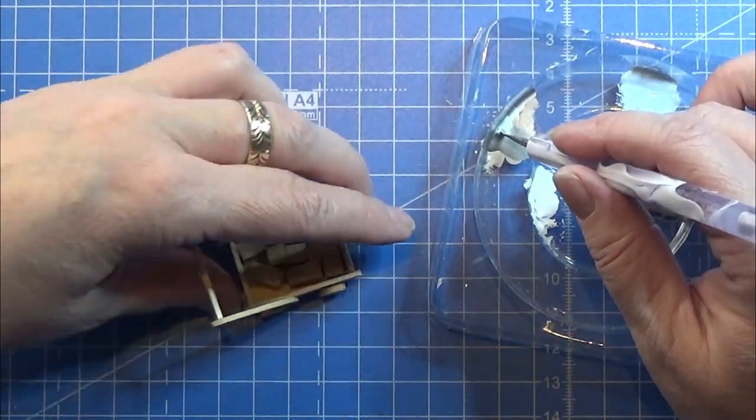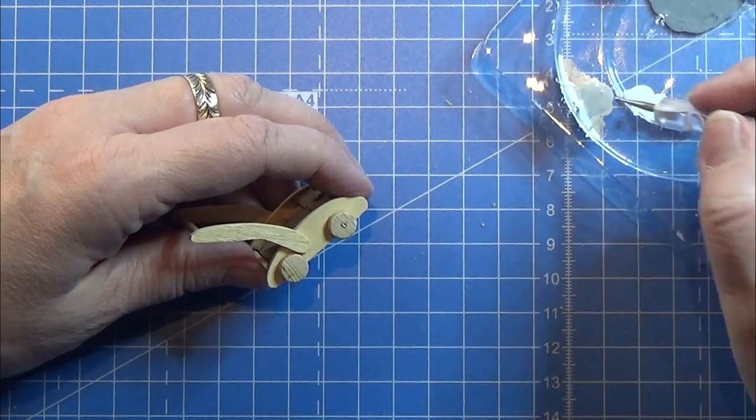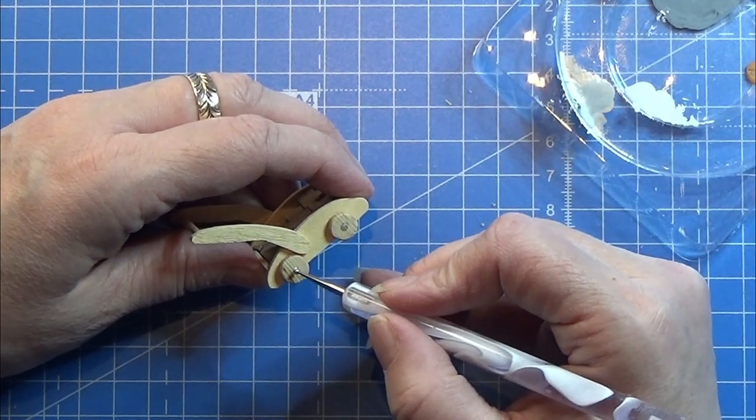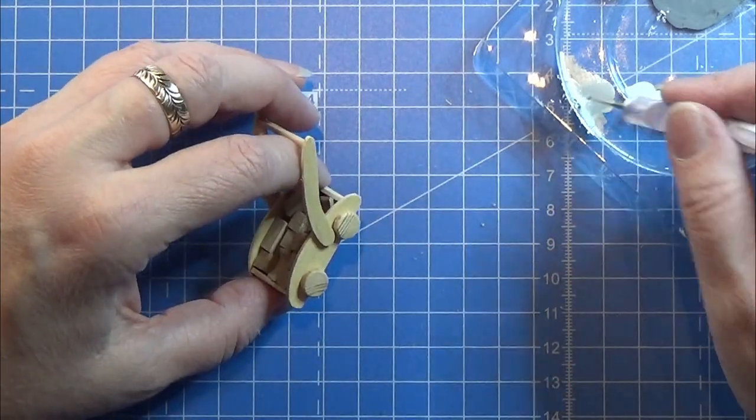Now I'm going to take my silver ink and I'm just placing a tiny dot here for the wheels like it was actually working. And I'm doing that on both sides of the car.